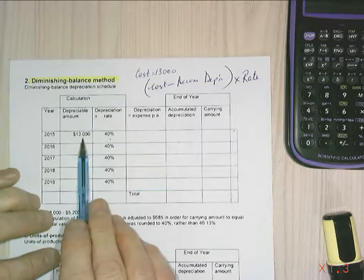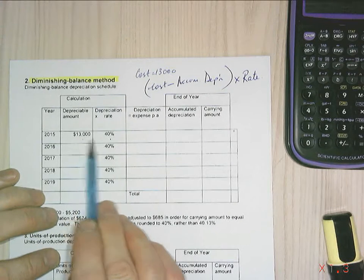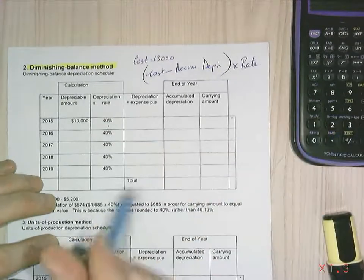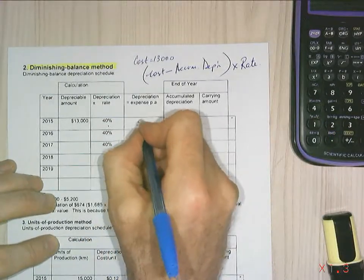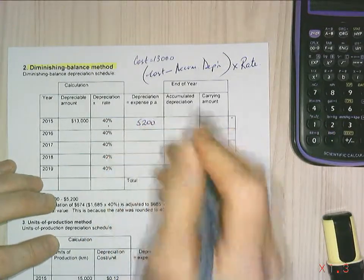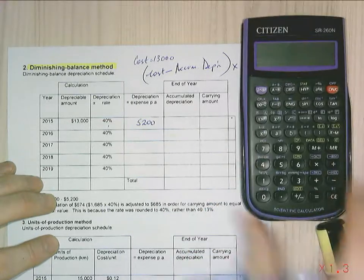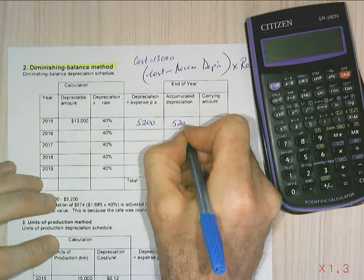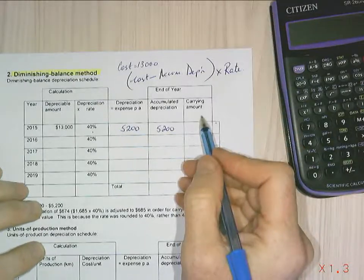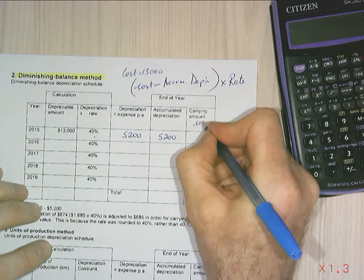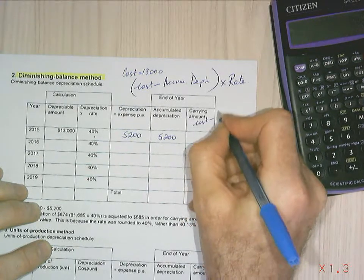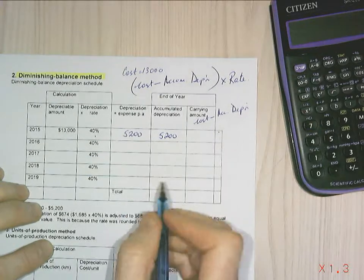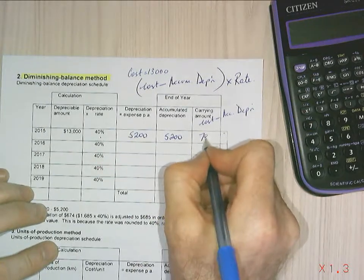So in the first year, my cost is $13,000. Multiplying that by 40%, gives me $5,200. My accumulated depreciation is $5,200. And my carrying amount, as mentioned before, is cost minus accumulated depreciation, comes in at $7,800.